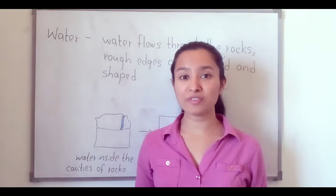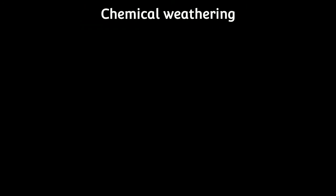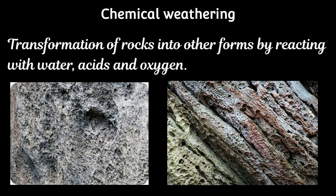This is how physical weathering happens — how water, wind, and heat all affect it. The second type of weathering is chemical weathering. There are chemicals in the rocks, and these chemicals react with water and oxygen. After reacting, the rocks transform into another form. This is called chemical weathering.